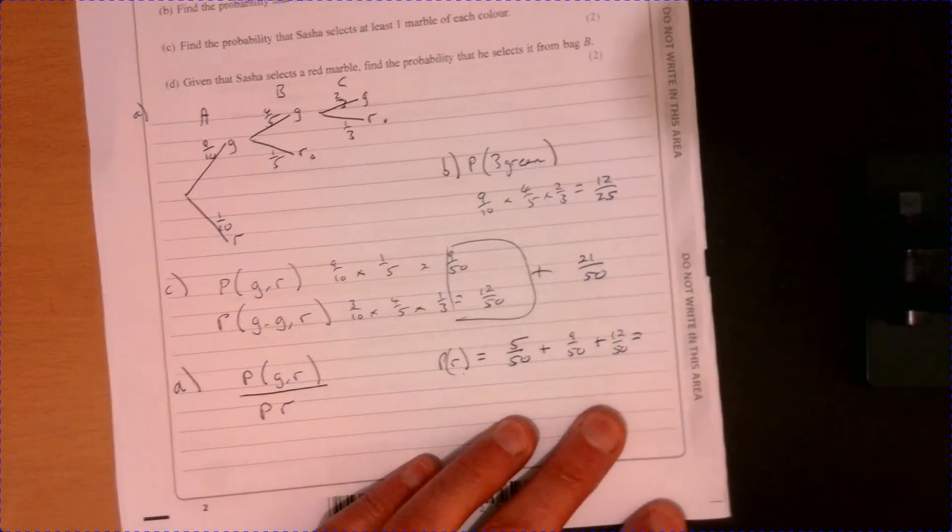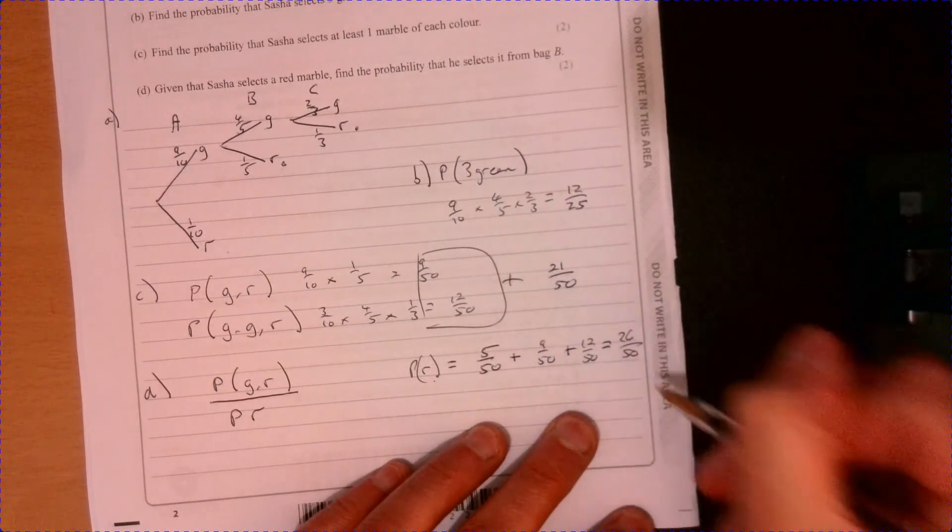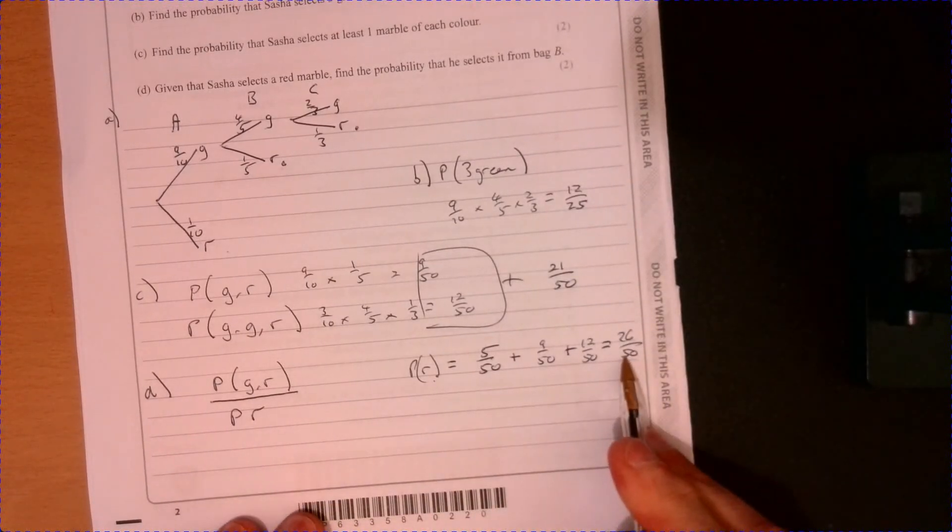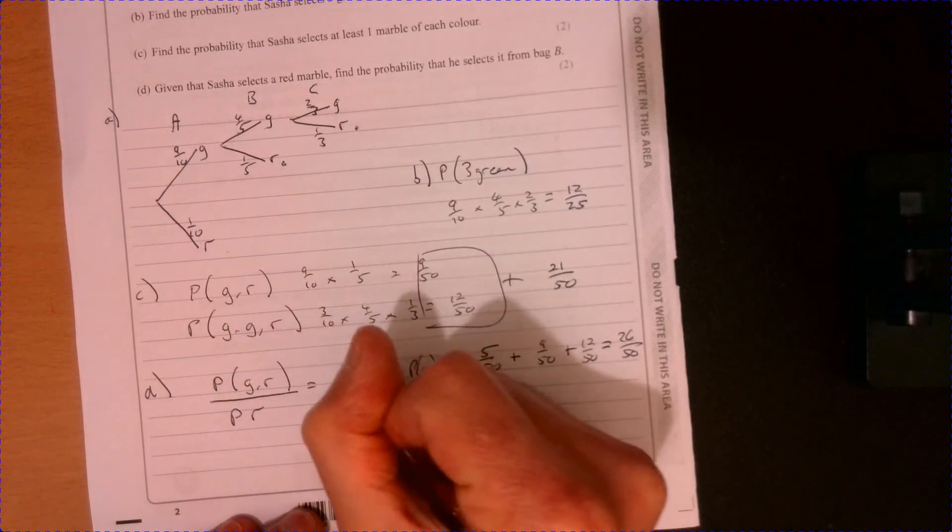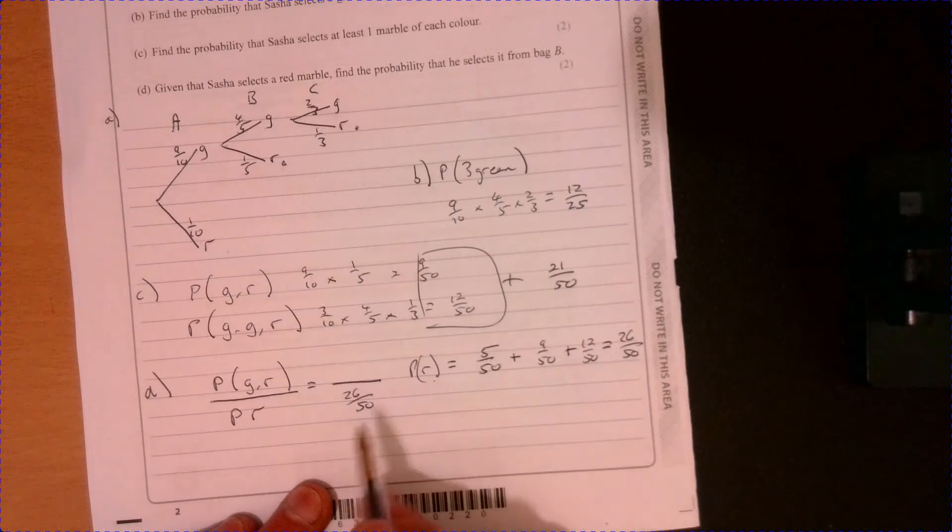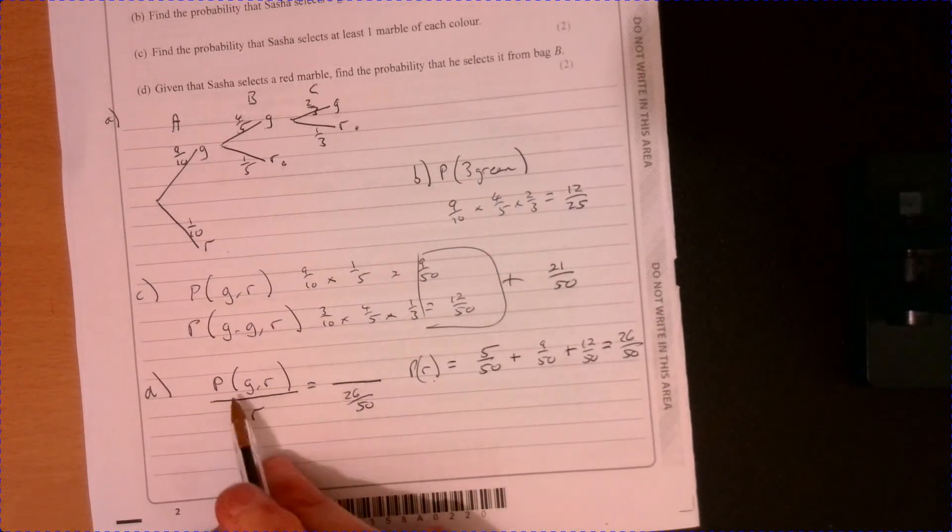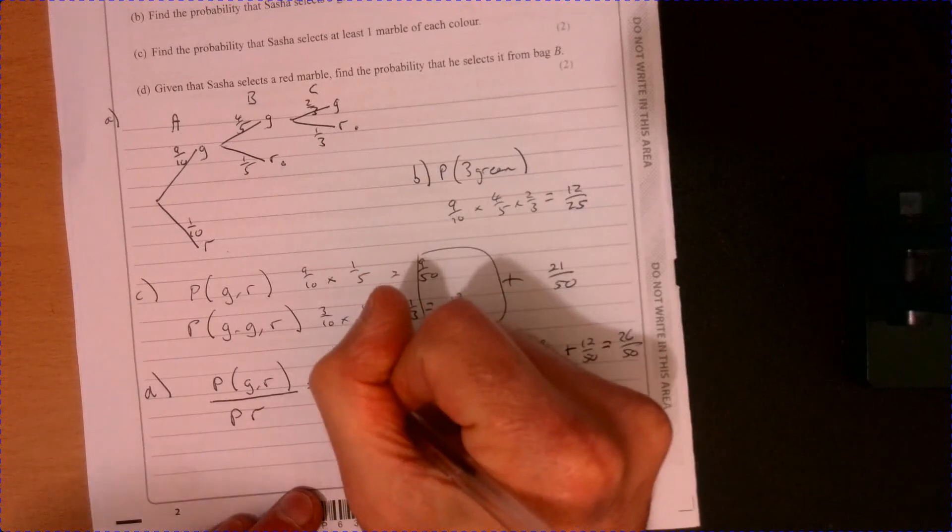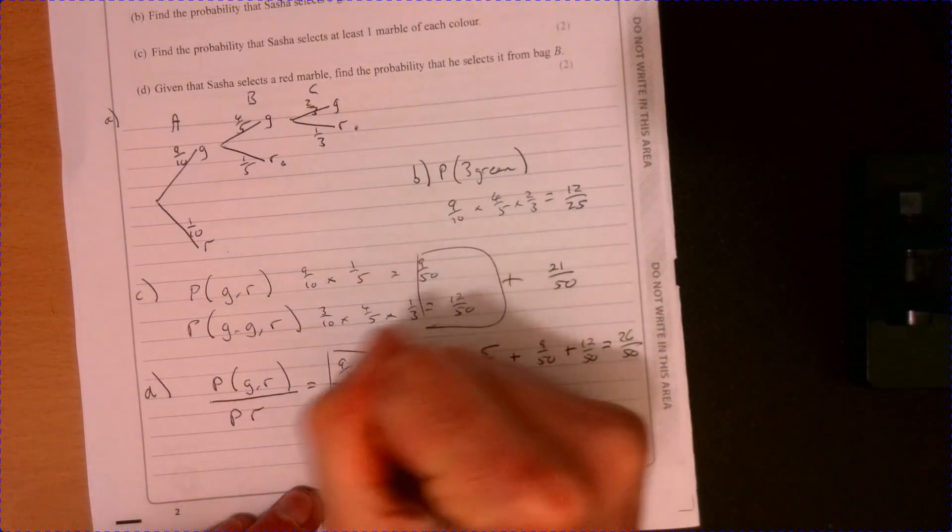And that one we just worked out previously was 12 over 50. So if we add that lot together, that's 26 over 50. So that's the probability of a red marble. Remember our question. So we've got 26 over 50. That's the probability of a red marble. And this is the probability that it comes from bag B. So 9 over 50.